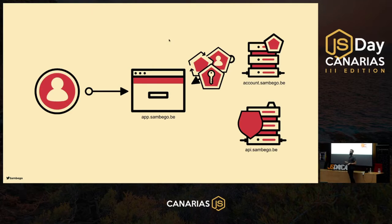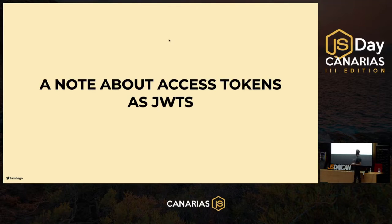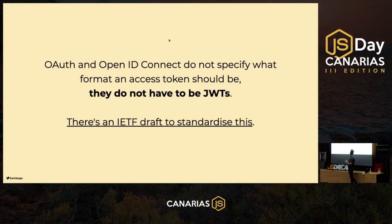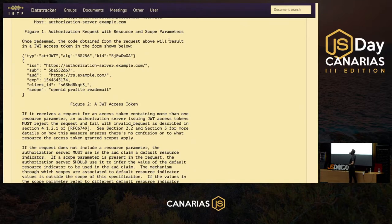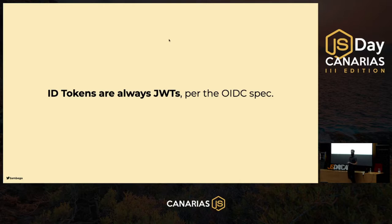A note about access tokens as JWTs: OAuth and OpenID Connect do not specify the format of access tokens — it can be an opaque string or a JWT. There's an IETF draft to standardize this as JWT with type 'at+JWT' (access token plus JWT), containing standardized claims for API use. ID tokens, on the other hand, are always JWTs — the OpenID Connect spec requires it. You cannot use any other format for an ID token.